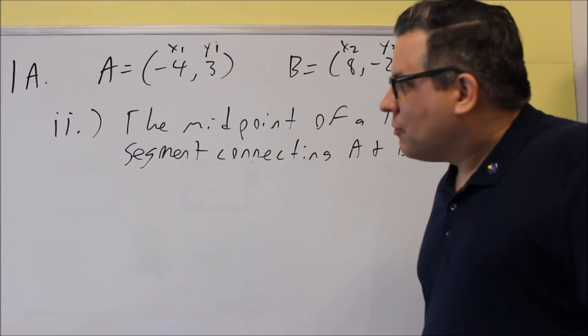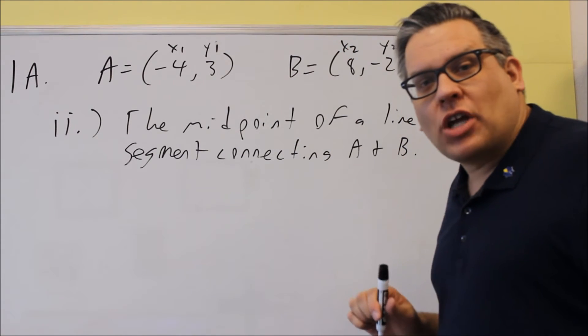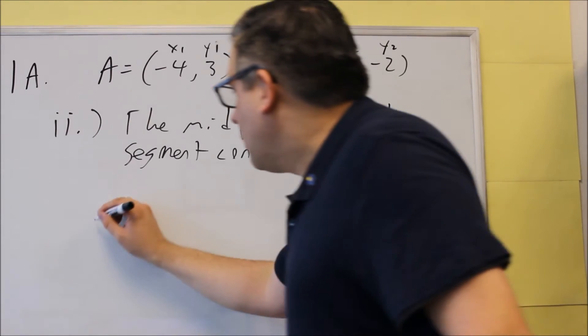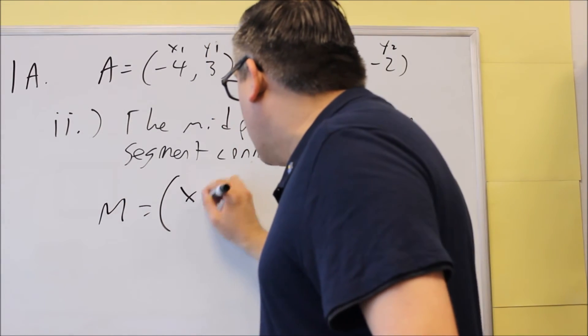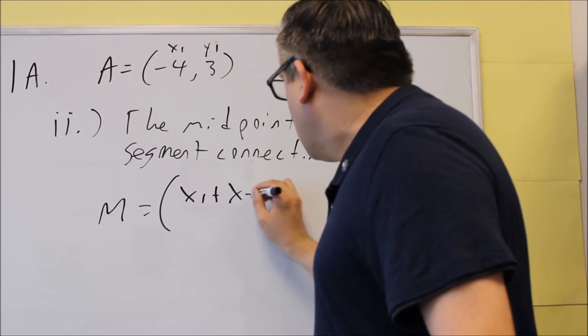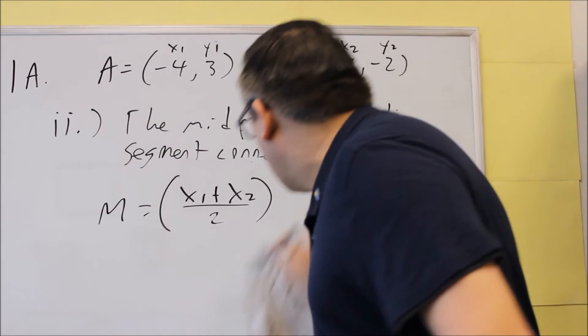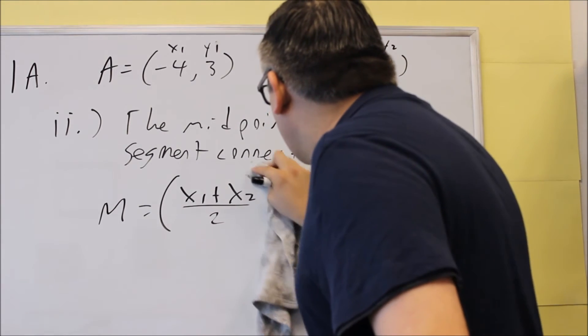Okay, for the next part, we want to find the midpoint of a line segment connecting A and B. So you have to know the midpoint formula. Let's go ahead and write that one. That's the average of the x values and average of the y values. So we're going to do x₁ plus x₂ over 2.